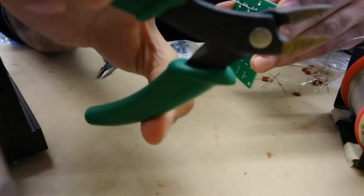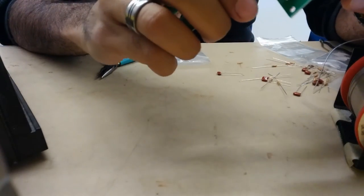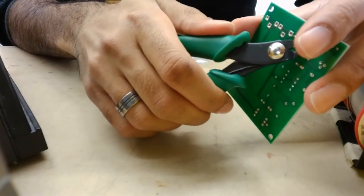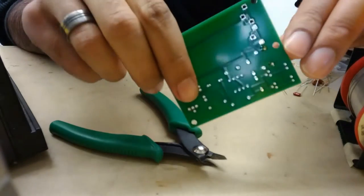Last but not least, you want to trim the excess lengths on the leads. Just be careful not to let them fly into your eye. You can hold it with your finger to keep it stable. And there we go! That's how we're going to assemble pretty much every component on here.